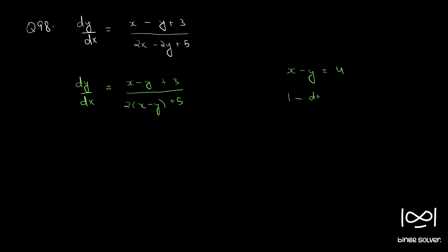1 minus dy by dx equal to du. So that becomes, this is 1, this is 2,